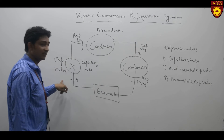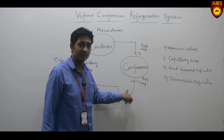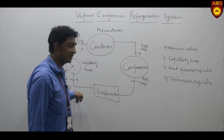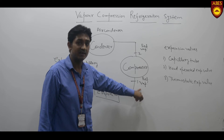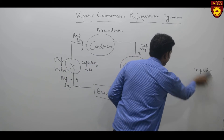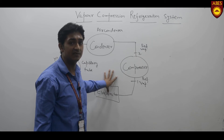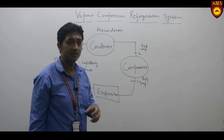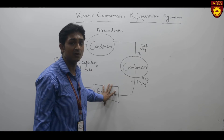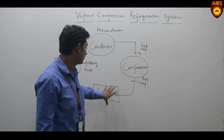After the expansion valve, the condition of the refrigerant is liquid. This liquid refrigerant travels through the evaporator, where it absorbs heat from the surroundings and makes the surroundings cool. The temperature of the liquid refrigerant rises as it passes through the evaporator, and it converts into vapour, and the cycle repeats itself. The evaporator is the device where we absorb heat from the surroundings. In home appliances like refrigerators, the freezer placed inside the fridge is the evaporator. In air conditioners, the cooling coils inside the AC are examples of the evaporator.